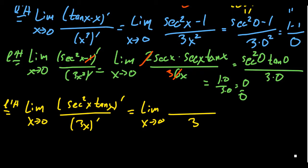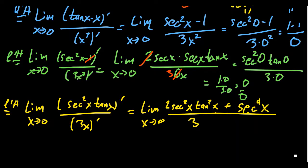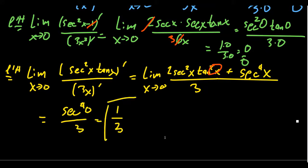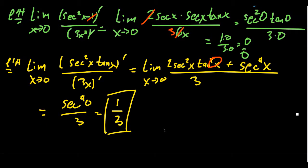Taking the derivative of the numerator by the product rule: the derivative of secant squared gives two secant squared tangent, and with the remaining tangent factor we get a tangent squared term; the derivative of tangent is secant squared, giving a secant to the fourth power term. Plugging in x equals zero, tangent of zero is zero so the first term disappears, and we're left with secant to the fourth of zero over three, which is one over three. So the original limit equals one third. We had to use L'Hôpital's rule three times.